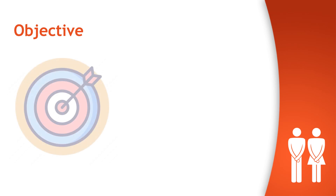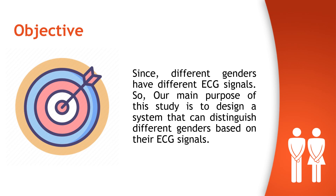Our main objective is to design a system that can distinguish between different genders based on their ECG signals. We should keep in mind that different genders have different ECG signals, so they can be used in order to design a system that can differentiate between different genders.